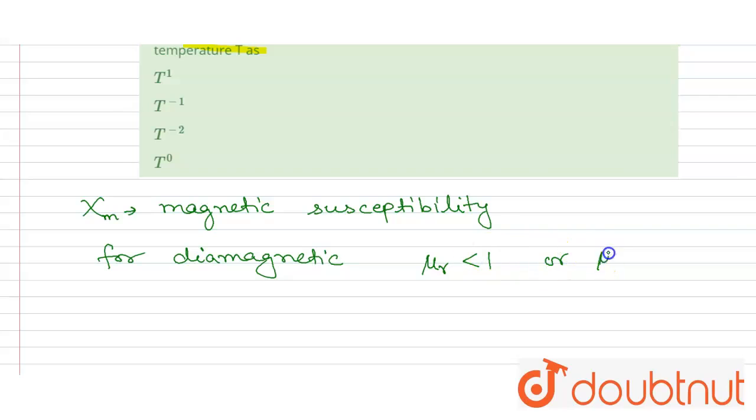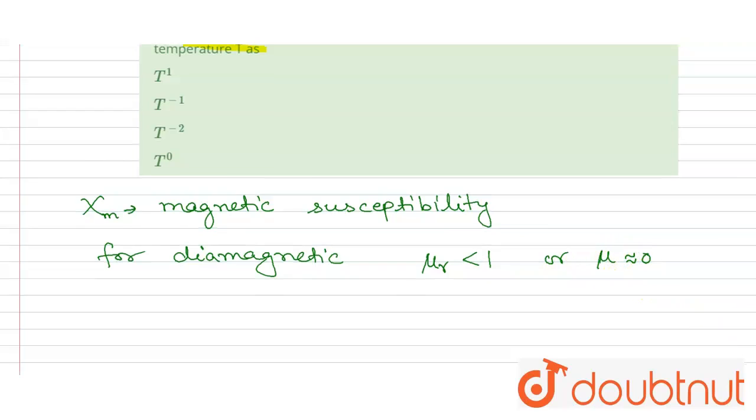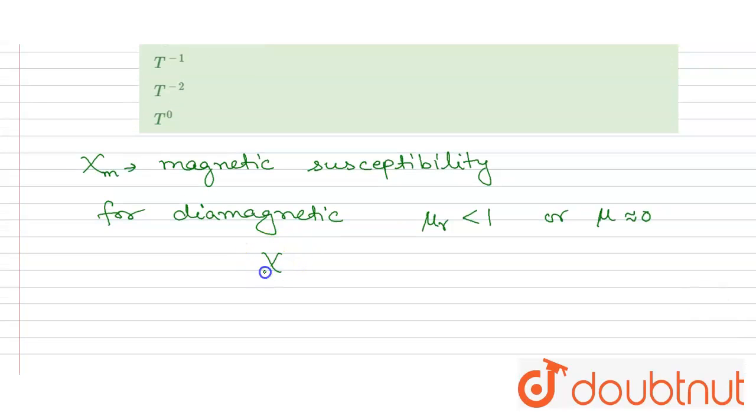Or we can say μr equals zero. There is a relation between χm and relative permeability: χm equals μr minus one. And here μr is less than one, so χm will be...